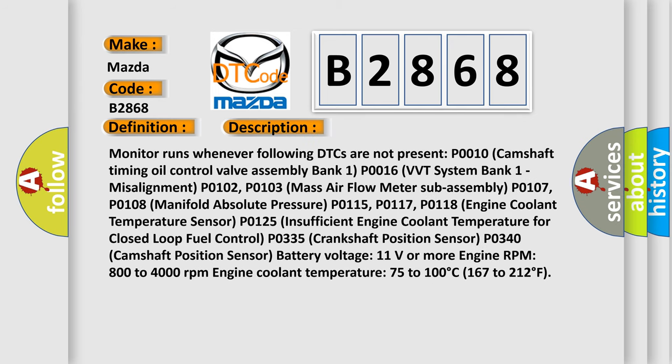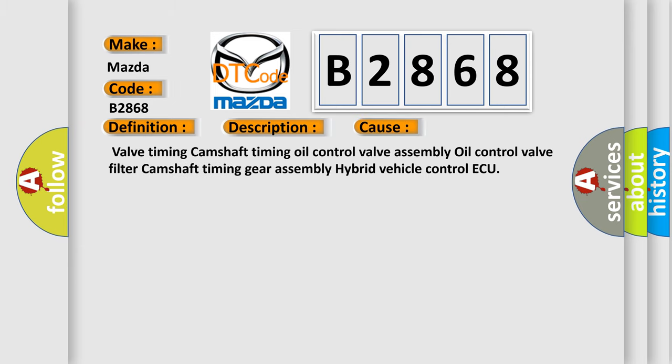This is a short description of this DTC code. The monitor runs whenever the following DTCs are not present: P0010 Camshaft Timing Oil Control Valve Assembly Bank 1, P0016 VVT System Bank 1 Misalignment, P0102/P0103 Mass Airflow Meter, P0107/P0108 Manifold Absolute Pressure, P0115/P0117/P0118 Engine Coolant Temperature Sensor, P0125 Insufficient Engine Coolant Temperature for closed loop fuel control, P0335 Crankshaft Position Sensor, P0340 Camshaft Position Sensor. Conditions: Battery Voltage 11V or more, Engine RPM 800–4000, Engine Coolant Temperature 75–100°C (167–212°F).